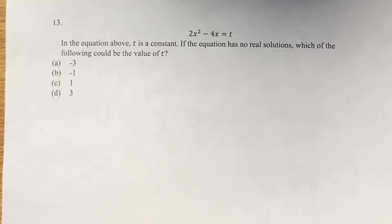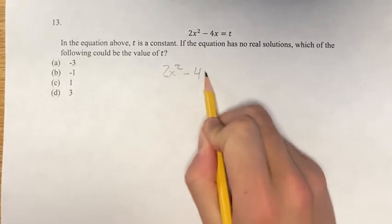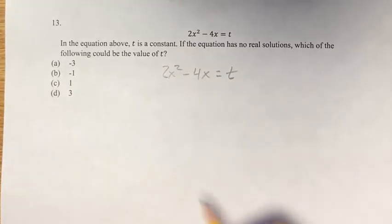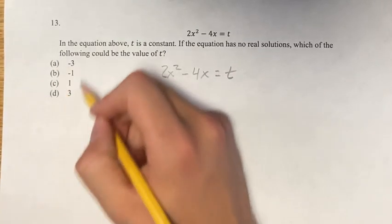Hello, and welcome back to another video. In this problem, we have the equation 2x squared minus 4x is equal to t, where t is just a constant. We're told that this equation has no real solutions, and which of these could be a value of t?